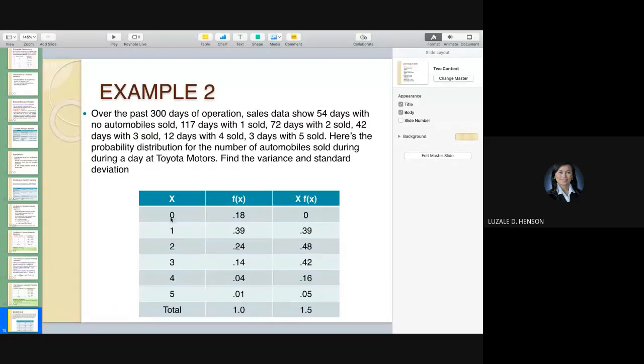So, let's have an example on this, aside from the tossing of a coin. Let us say, you have data like this one. Over the past 300 days of operation in a certain car dealer, sales data shows 54 days with no automobiles sold, 117 days with 1 sold, 72 days with 2 sold, 42 days with 3, 12 days with 4, 3 days with 5. So, here's the probability distribution for the number of automobiles sold during a day at Toyota Motors. Find the variance and standard deviation.